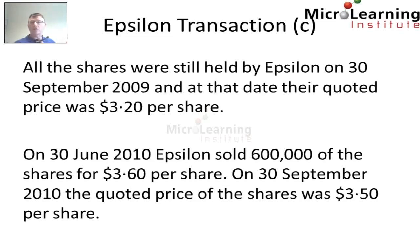At the 30th of September 2009, the quoted price was $3.20 per share. On the 30th of June 2010, Epsilon sold 600,000 of the shares for $3.60 per share. And on the 30th of September 2010, the quoted price of the shares was $3.50 per share.